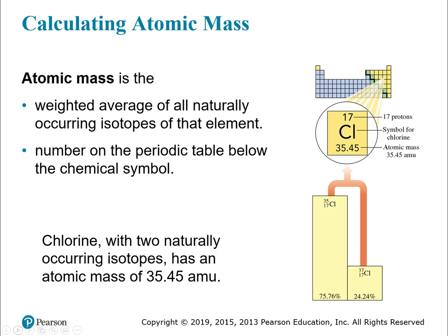Finally, we're getting to calculating the atomic mass. The atomic mass is a weighted average of all the naturally occurring isotopes, and that decimal number below the element symbol on the periodic table is the atomic mass. Chlorine is another example — there are two naturally occurring isotopes. About three-quarters is chlorine-35 and about one-quarter is chlorine-37. The difference between them is the number of neutrons. When you account for the atomic mass and percent abundance of each isotope, you can calculate the atomic mass.